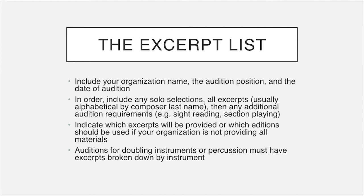The excerpt list is the first and foremost thing in the booklet. It needs to include your organization name, the audition position, and the date of audition. In order, include any required solo selections and all excerpts — usually alphabetical by composer last name — and any additional requirements such as sight reading or section playing. If you're only providing some excerpts, indicate which will be provided and which won't. An important note: if the audition requires doubling instruments or percussion, excerpts need to be ordered by instrument, which helps both applicants and logistics on the day of rounds.